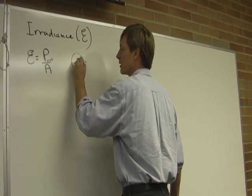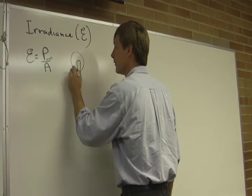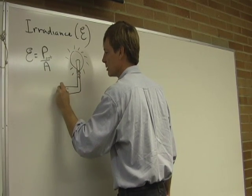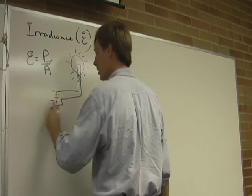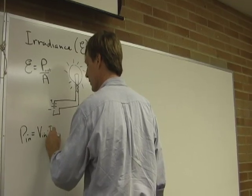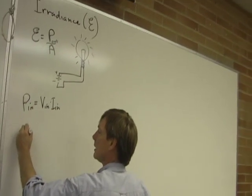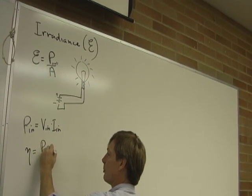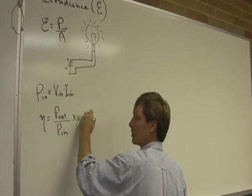Incandescent bulbs are so much more wasteful. If somebody has a good idea and you see a little incandescent light bulb above their head, it's probably not that good an idea. This is hooked up to a DC supply. The efficiency of the system is given by the Greek letter eta — it looks like an 'n' that's drooling — and that's the ratio of the output power to the input power times 100%.